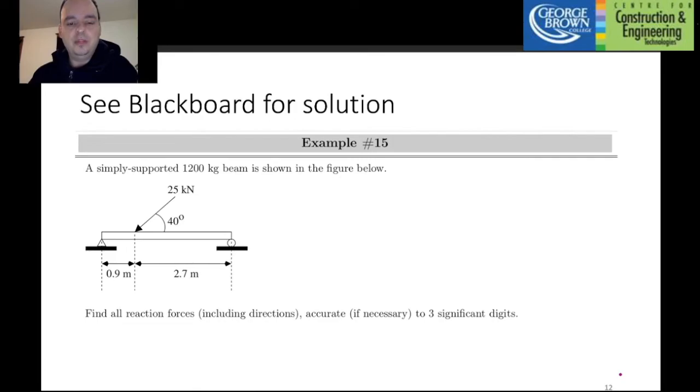That concludes the examples for beams, at least the ones that I will work through with you. Here is an example for you to try on your own, and the solution is on Blackboard. I would like to point out that in this case, the 25 kilonewtons force is at an angle of 40 degrees with respect to the span of the beam. Meaning that this reaction force in the horizontal direction, which I called R1, for example, it is not going to be zero, because now it has to counteract the horizontal component of that force. So, take a good effort, try this question, and if you do get the answer as on Blackboard, then you are in excellent shape for this material.